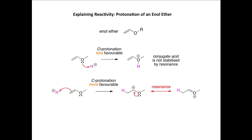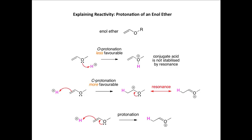For protonation on carbon, we take the pair of electrons from the pi bond of the C=C double bond and push toward the proton at the end of the chain, placing the positive charge in the middle of the chain. This conjugate acid from C-protonation is more favorable because it is stabilized by resonance — we can draw a resonance form from donation of the lone pair on oxygen toward the positive charge, delocalizing it over the molecule. The ability to draw two resonance forms for the conjugate acid indicates greater stability. Typically, the protonation of an enol ether is drawn by taking the lone pair from oxygen directly through the C=C double bond onto the proton.